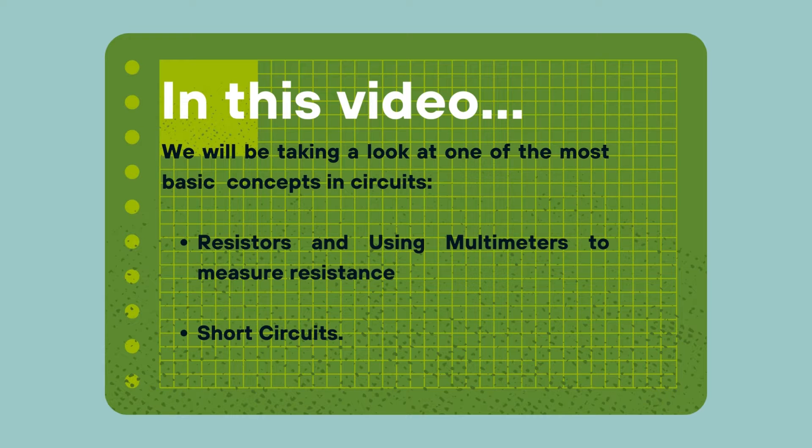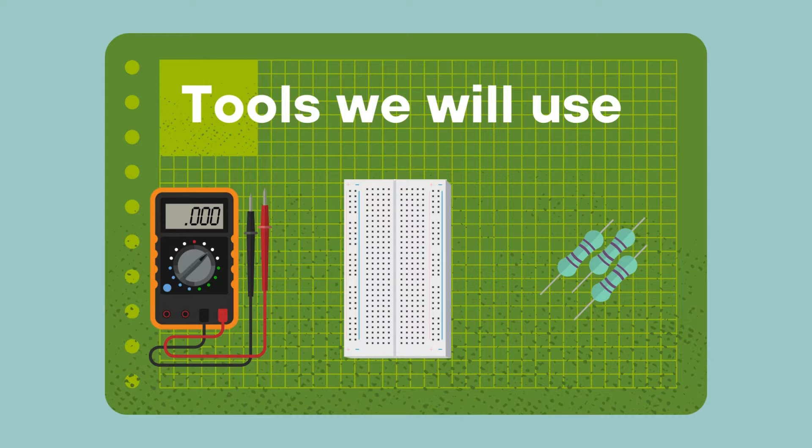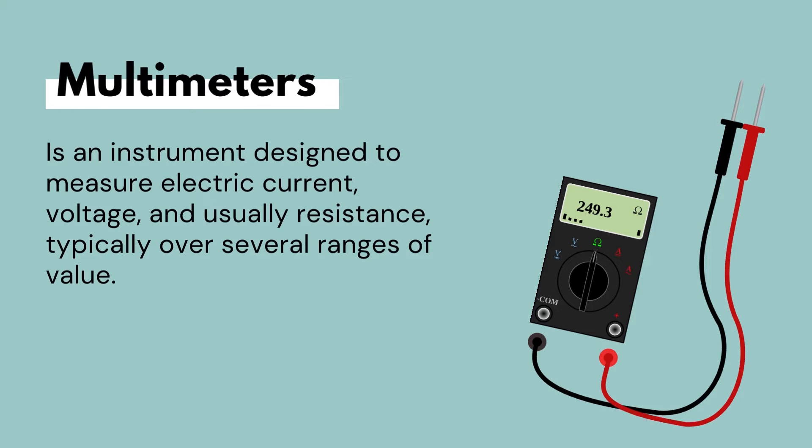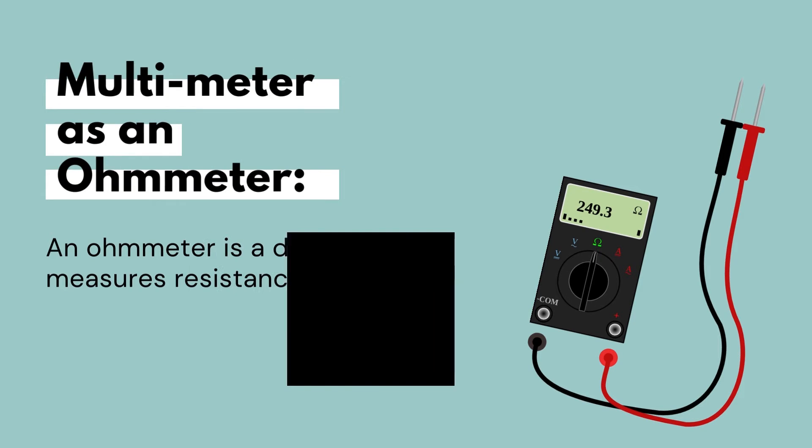In this tutorial we have three main equipments or components that we will be using and they are multimeters, breadboards and resistors. Remember a multimeter is an instrument designed to measure electric current, voltage and usually resistance. In this video we will be using the multimeter as an ohmmeter to measure the resistance.